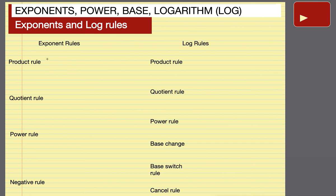The product rule for exponent says that a to the power of m times a to the power of n is equal to a to the power of m plus n. Also, a times b to the power of m is equal to a to the power of m times b to the power of m.